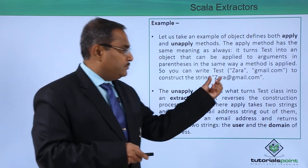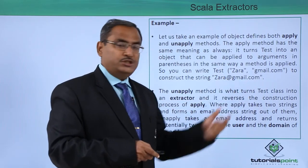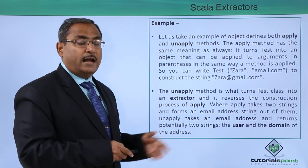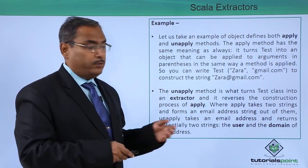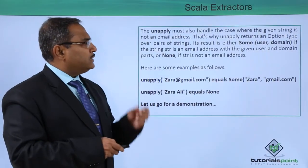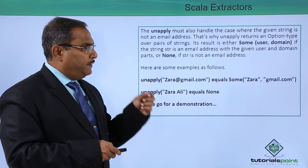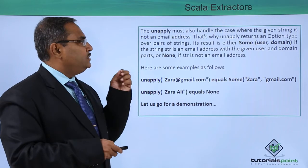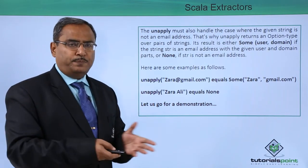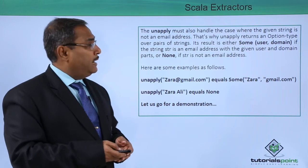Unapply returns the potentially two strings that are the user and the domain of the address. So here the user is "Zara" and the domain of the address is "gmail.com". In this way apply and unapply work together. The unapply must also handle the case where the given string is not a valid email address.